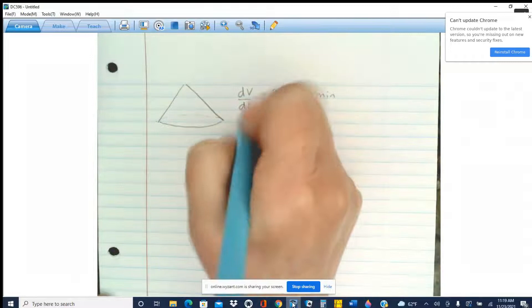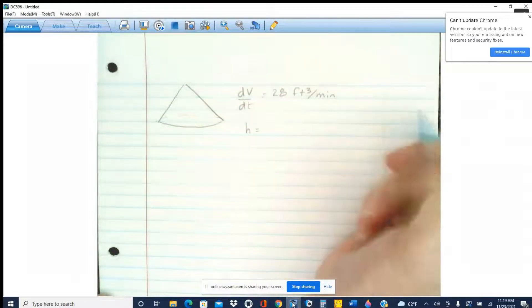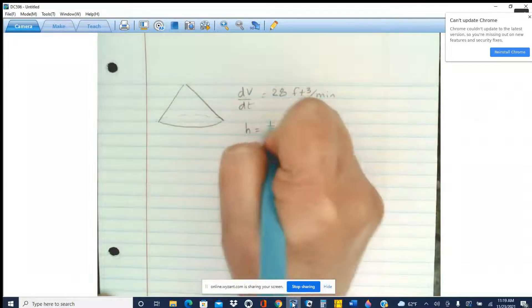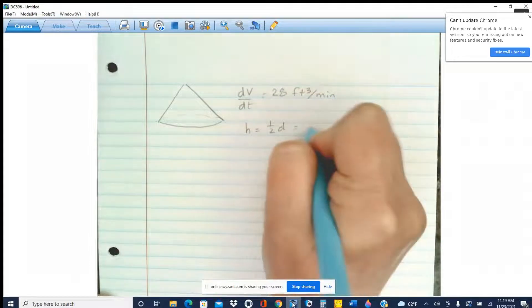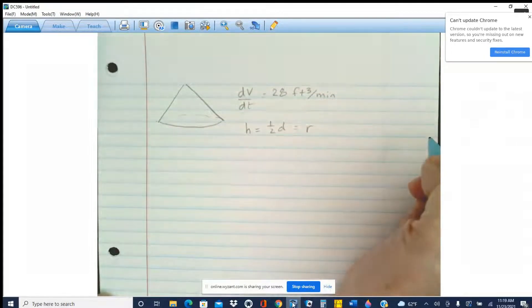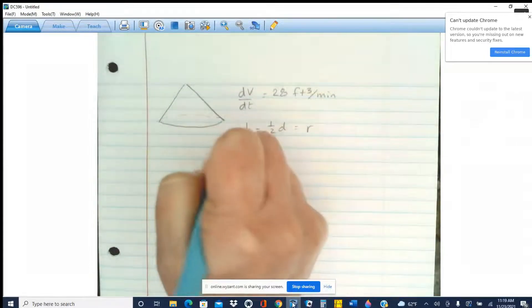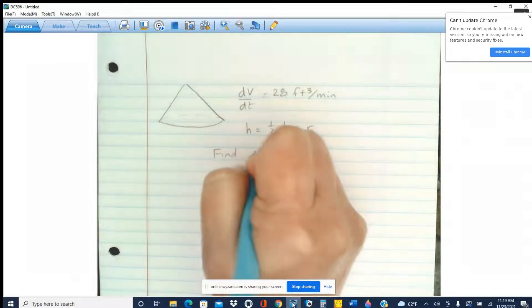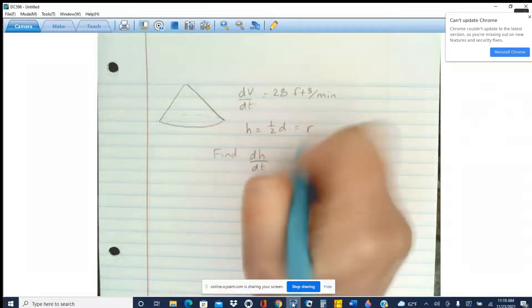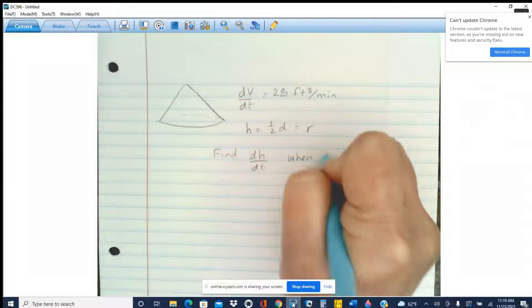And we're also given that the height of the sand pile is one half the diameter of the base, but that means it's equal to the radius. And we want to find the rate of change of the height of the pile when the height is 12 feet.